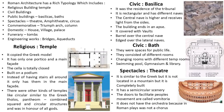Roman architecture has rich typologies which include religious buildings (temples), civic buildings, public buildings, spectacles, commemorative, domestic, funerary and engineering works. Religious buildings copied the Greek model — with only one portico on the main façade, the cella totally closed, built on a podium, and stairs only on the main façade. There were other kinds of temples like circular ones similar to the Greek tholos, the Pantheon as a combined square and circular structure built in honor of all gods.